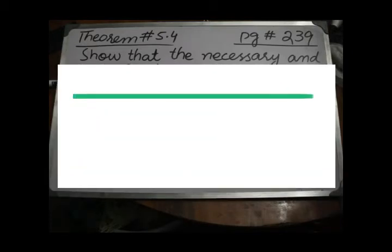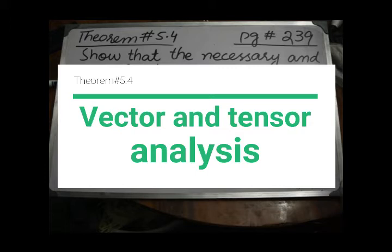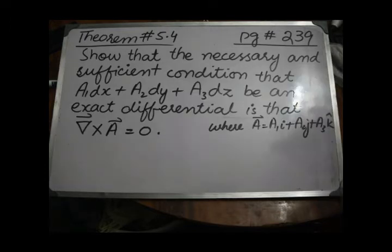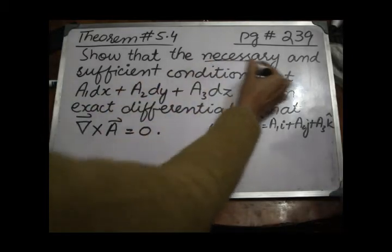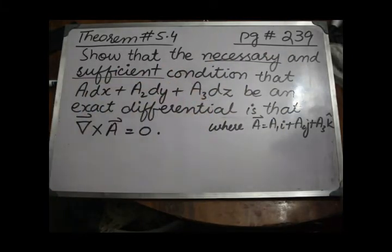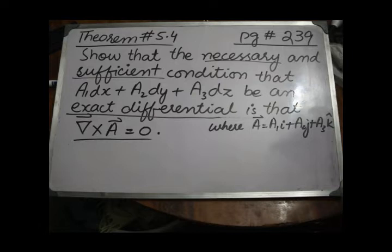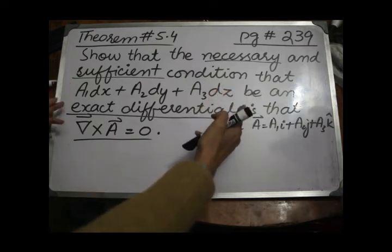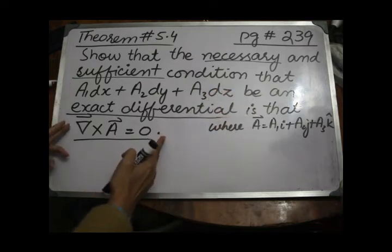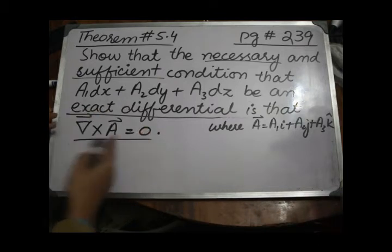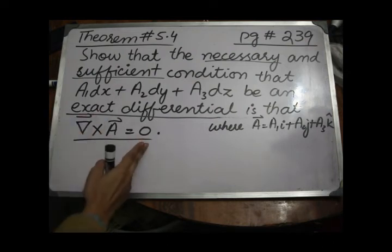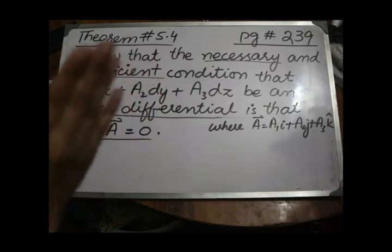In the name of Allah. We will study Theorem 5.4 in today's lecture, on page number 239. The theorem's statement is: show that the necessary and sufficient condition that a1 dx plus a2 dy plus a3 dz be an exact differential is that del cross a equals zero. This means that if we want to check for an exact differential, we take the vector curl with del. If its value is zero, then our differential is an exact differential.